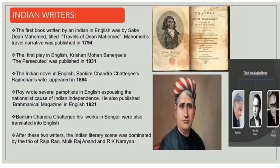The first book written by an Indian in English was by Seyed Deen Mohamed titled Travels of Deen Mohamed, published in 1794. The first play in English, Krishnan Mohan Banerjee's The Persecuted, was published in 1831. The Indian novel in English, Bankim Chandra Chatterjee's Raj Mohan's Wife, appeared in 1864. Roy wrote several pamphlets in English espousing the nationalist cause of Indian independence, and also published Bramical Magazine in English in 1821. Bankim Chandra Chatterjee's works in Bengali were also translated into English.